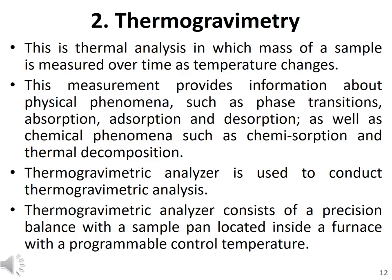Different pressures can also be employed in TGA, such as high vacuum, high pressure, constant pressure, or controlled pressure. The thermogravimetric data collected from the thermal reaction is compiled and plotted by taking mass on the y-axis and temperature or time on the x-axis, producing a thermogravimetric analysis curve. This TGA curve can be used for material characterization through analysis of characteristic decomposition patterns.